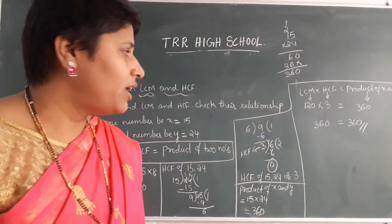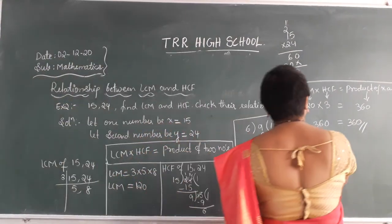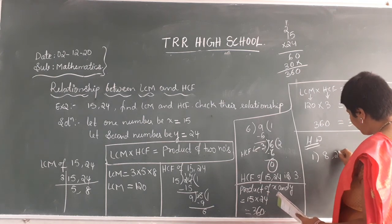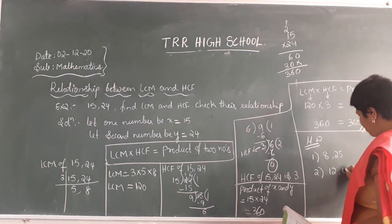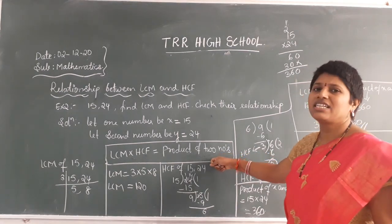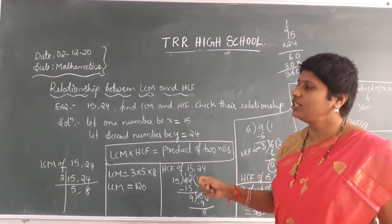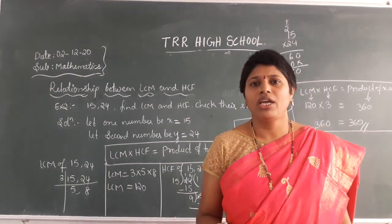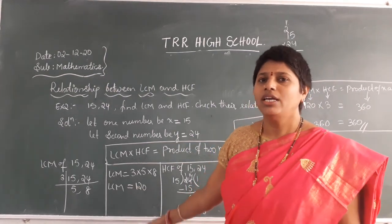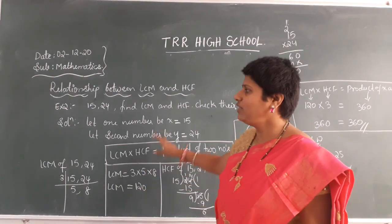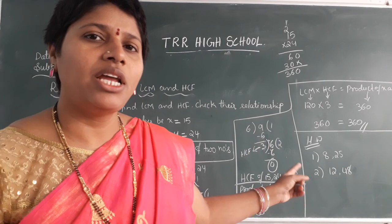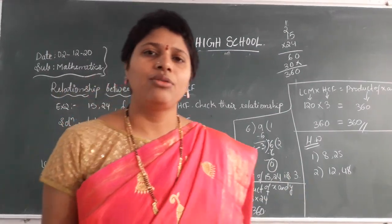So here I will give you homework numbers to find the relationship. First one is 8 and 25, second one is 12 and 48. For these 2 pairs of numbers, do this entire process and check the relationship. Note that this question carries 8 marks in your exam. The same concept is there for 5th and 6th class, so try to understand and do it. If you do those 2 problems you will understand clearly. Thank you, have a nice day.